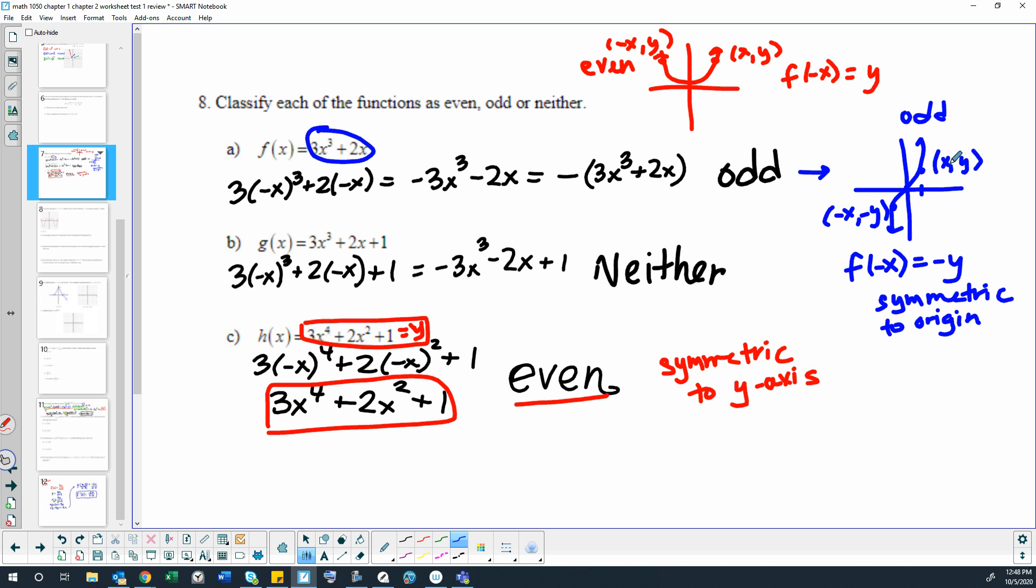If you have a point at (x,y), then you would also have a point at (-x,-y). So plugging in a negative x should give you a negative y. If it's even, plugging in a positive x gives you a positive y. Plugging in a negative x should give you the same positive y because it's symmetric to the y-axis.